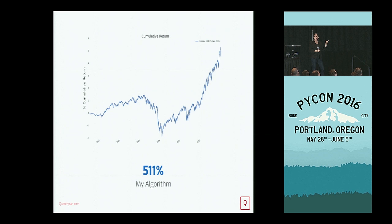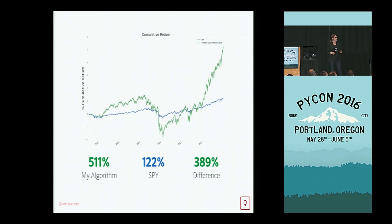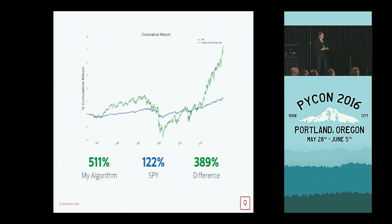It wasn't until about 3 o'clock in the morning that I realized I didn't actually know what this meant. Does it beat the market? Is this good? The next day I came back to work and got some help putting it against a benchmark. This is the first strategy of the Fortune 1000 female CEOs as compared to the S&P 500. In this particular scenario, it outperforms by 389%. Now that sounds awesome, but how many of you write bug-free code on the first shot?